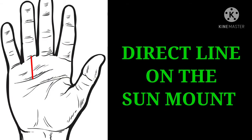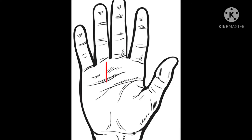Direct line on the sun mount. If the sun mount is well mounted and there is a direct line on the sun mount without any obstruction, then the chances of government job increases for these people a lot.